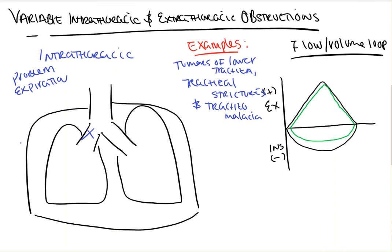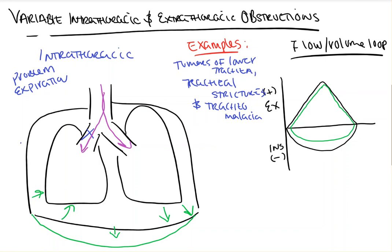When the patient inhales, the diaphragm drops just like it always does — pressure equals force over area, area goes up, pressure goes down. Pleural pressure decreases, air moves down through the airways and stents the small airways open because they're under less pressure. This allows air to move in and helps stent the intrathoracic airway open during inspiration.